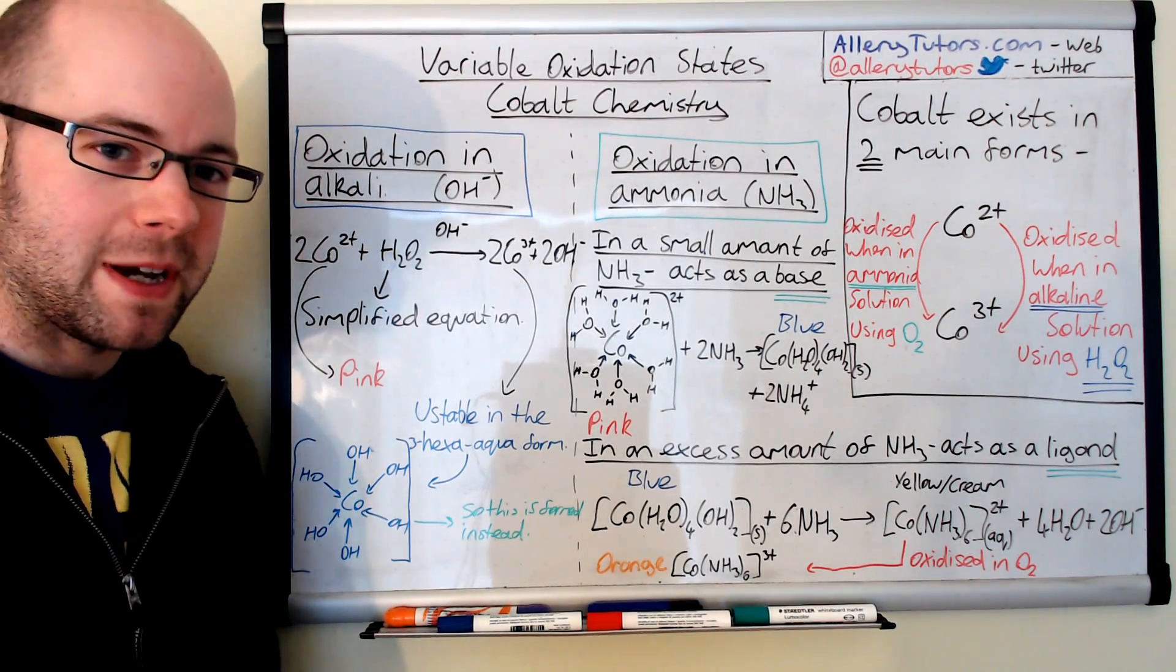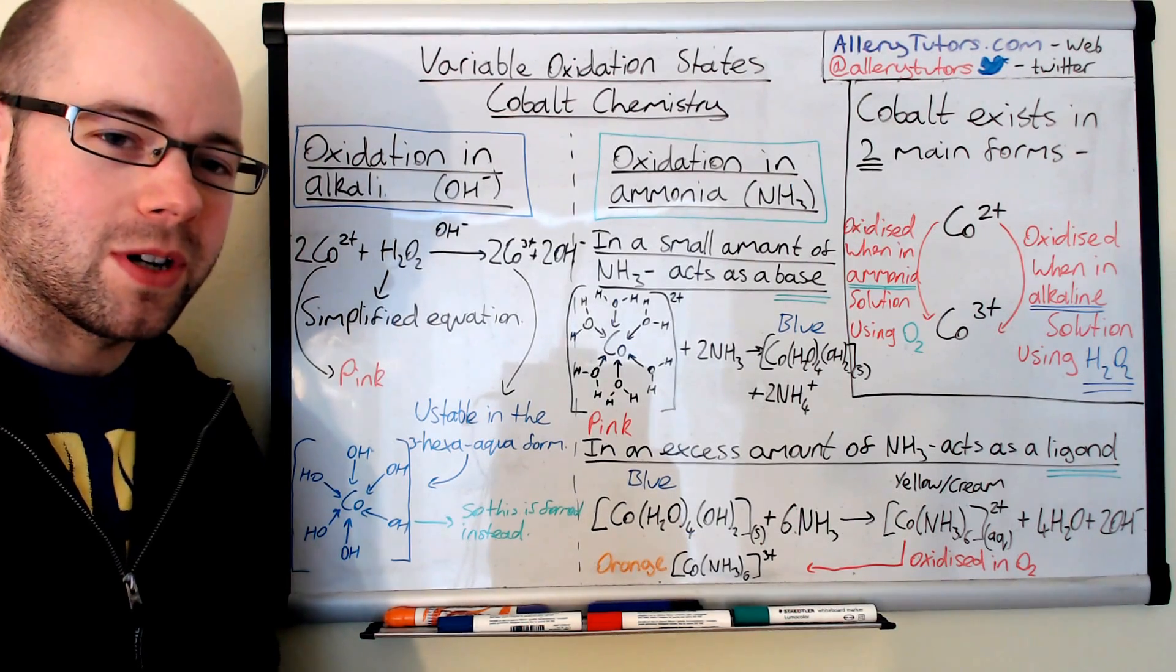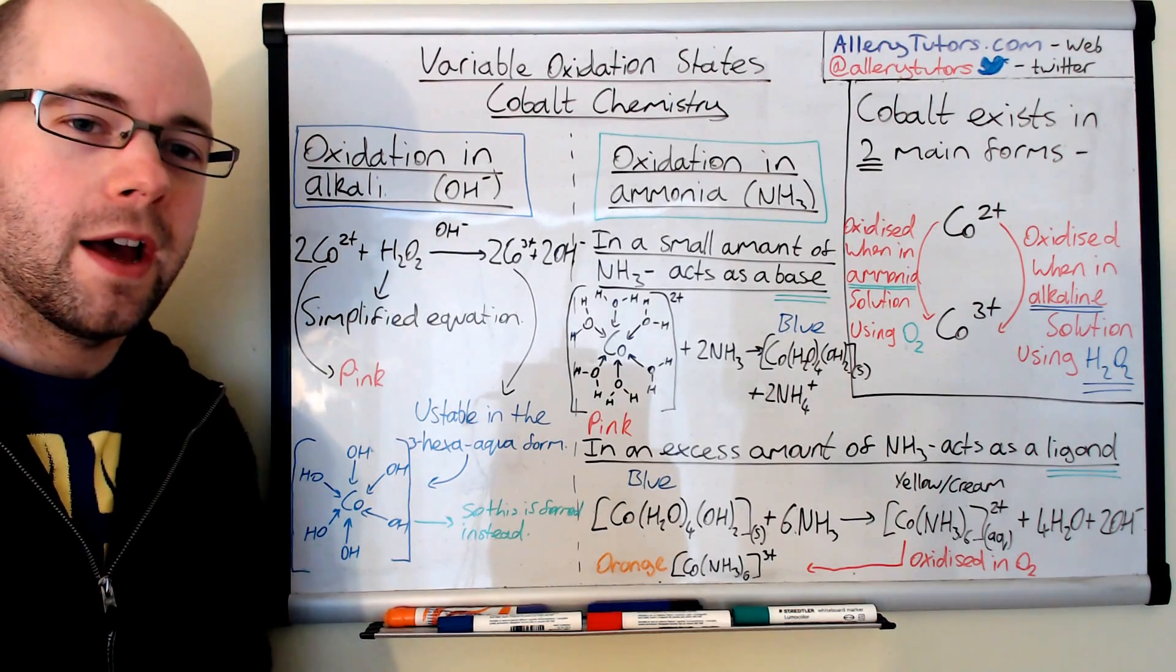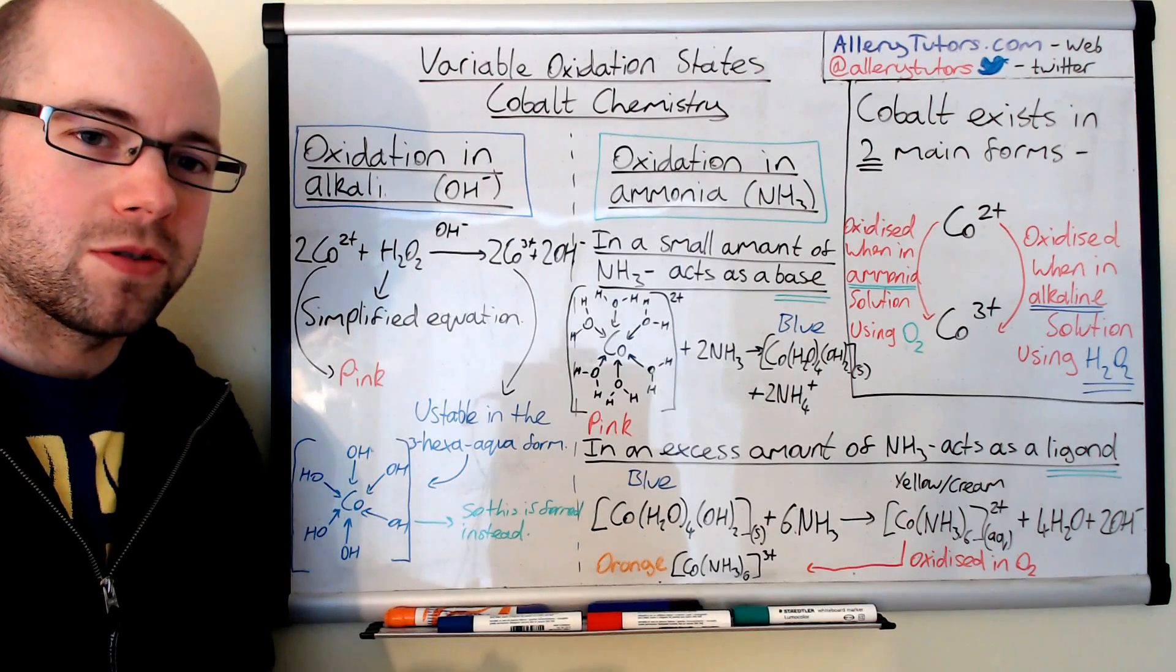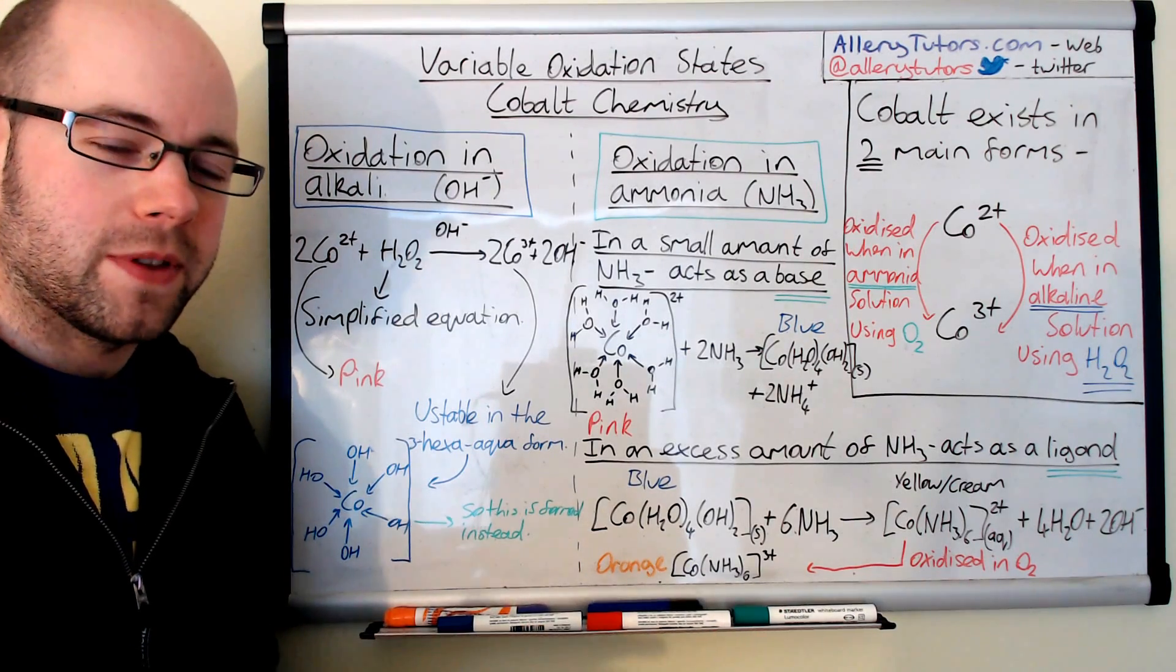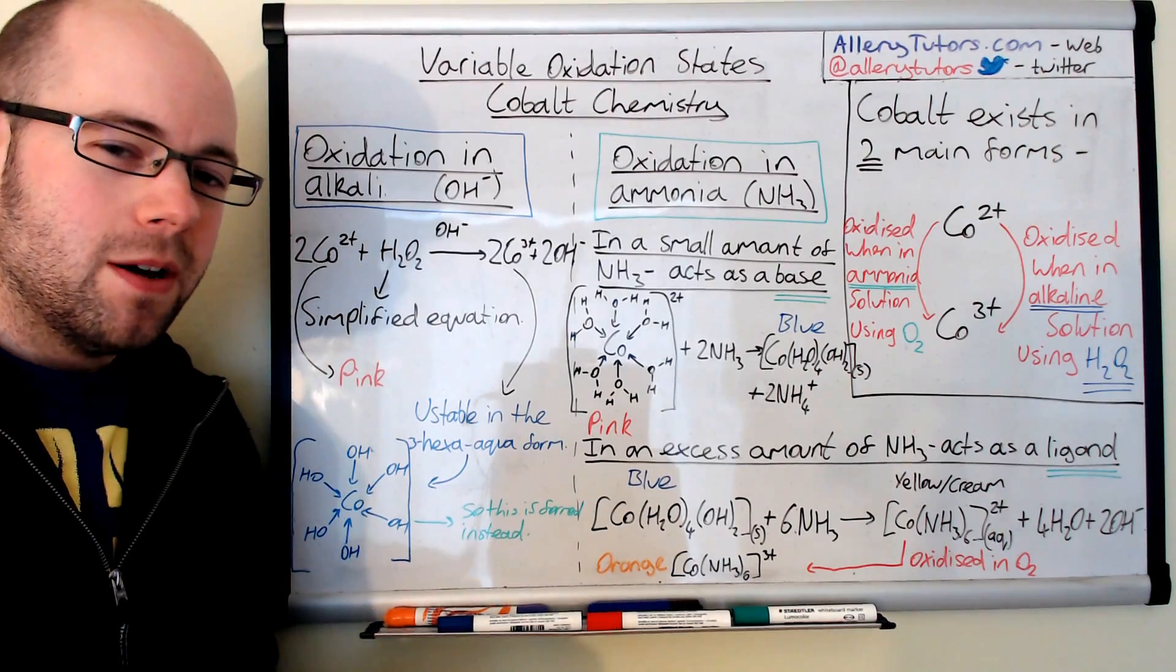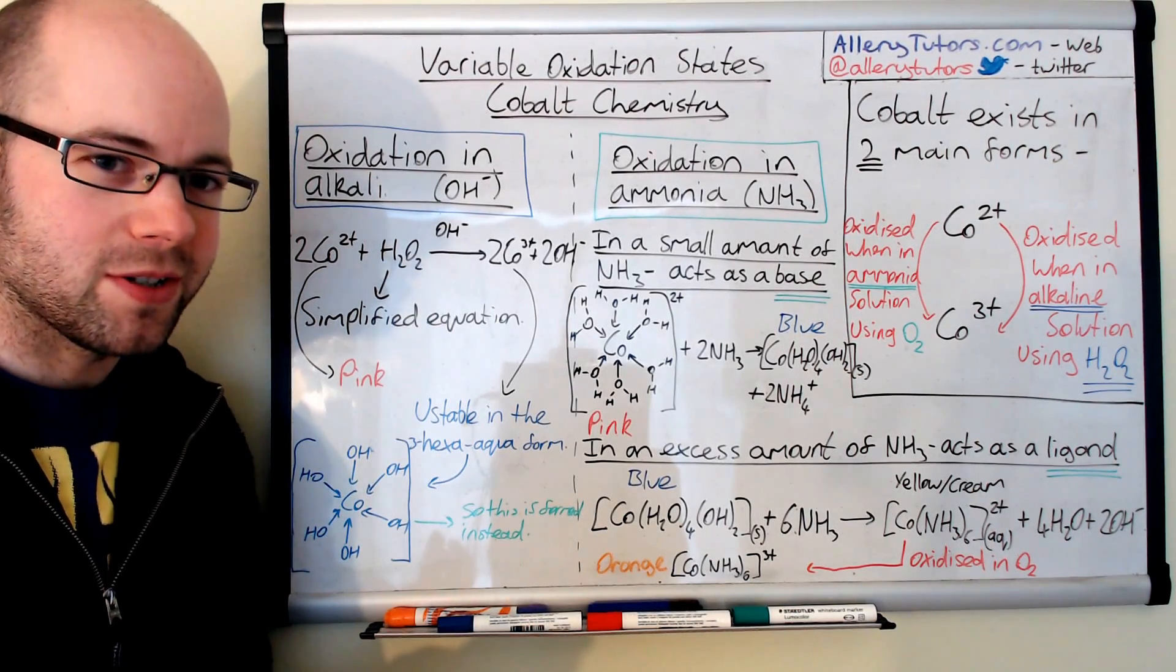So in this video we're going to look at two main types of cobalt ion that we're interested in. We're also going to look at the oxidation of cobalt 2 plus in alkaline solution and that will be a hydroxide based compound. We're also going to look at oxidation of the same ion using ammonia, which is NH3. We're also going to look at the complex formation and we're going to look at the colors of these things as well.